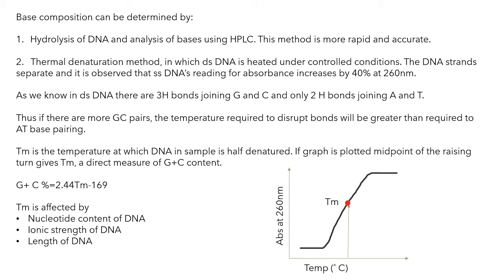First is hydrolysis of DNA. You can do hydrolysis of DNA and then HPLC analysis. This is a very good and rapid method. It is accurate and gives you good results about the amount of each base that is present in your DNA.